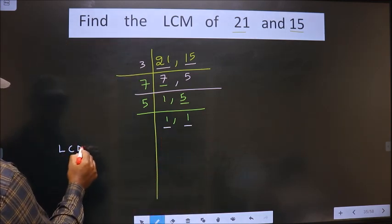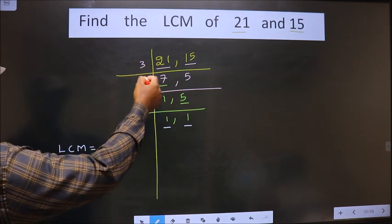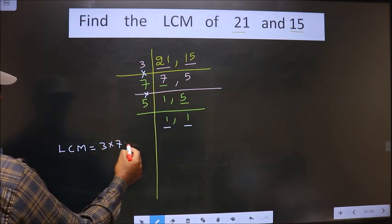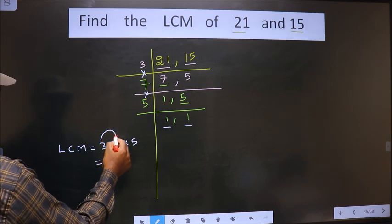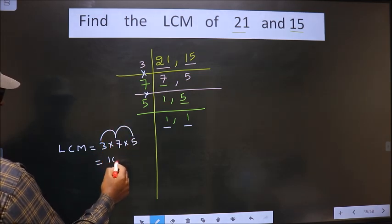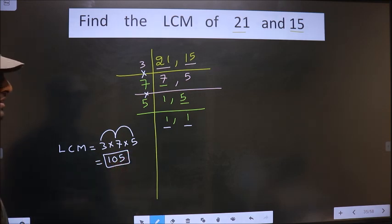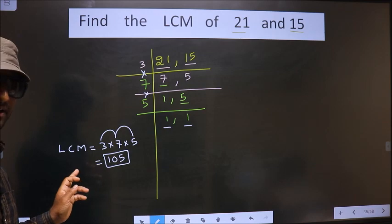So now our LCM is. LCM is the product of these numbers. That is 3 into 7 into 5. So 3 into 7 is 21. 21 into 5 is 105. So this is our answer. Am I clear?